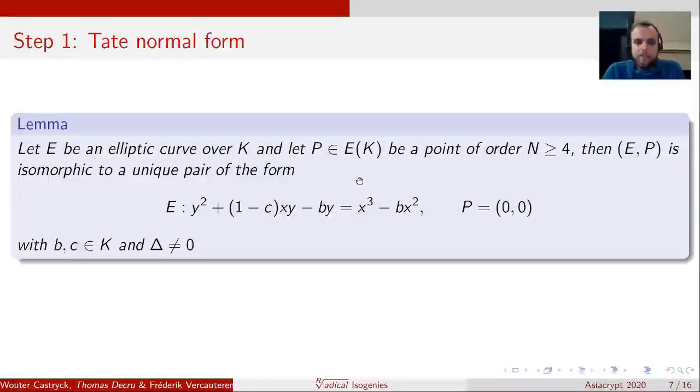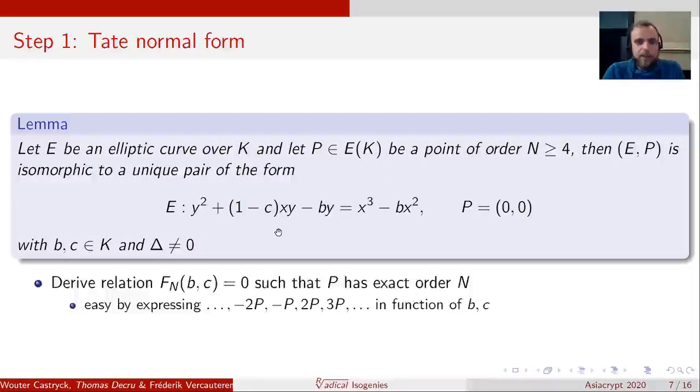So step one is the Tate normal form. Every curve E with a point P of order at least 4 can be written in an isomorphic form, which looks like this, and where P is simply translated to the point (0,0). We want the discriminant to be non-zero, and we also need N to be at least 4. Now, if N is 2 or 3, you can make a very similar argument, just not with the Tate normal form. If you want to read the details of the cases N equal 2 or 3, they are in our paper as well. Now, there's a unique form of this. However, for a given N, we can still derive a relation such that P has exact order N.